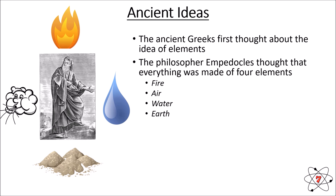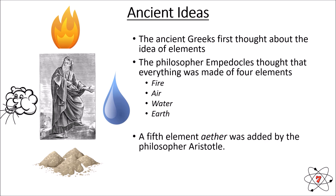After a while, a fifth element called ether was added by the philosopher Aristotle, so the ancient Greeks had these ideas that everything was made up of five basic elements. Of course we now know these ideas are incorrect. We now know that it's not just five things that make up everything — we still call these things elements, but we now know there are lots and lots more of them.